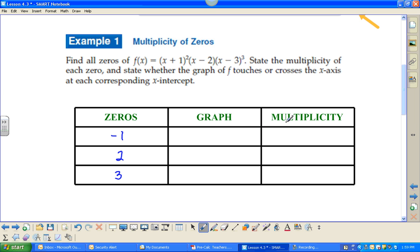At the 1, since it has a degree of 2, that means the multiplicity is 2. And for the graph, it's just going to touch the graph.